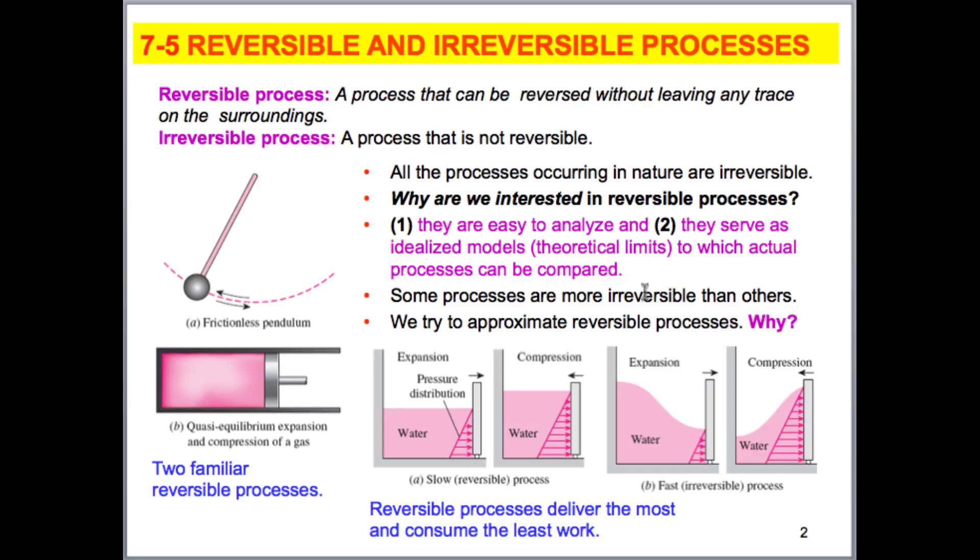In irreversible cases, we have friction, things that cause losses. When things move quickly, we have energy losses that occur. We may have friction, other things occurring. But reversible, we don't have. It's kind of an ideal case. We can't ever have that occurring in reality.